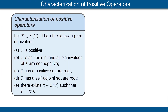Now we come to a nice theorem that gives several equivalent conditions for an operator to be positive. The theorem states that if T is an operator on V, then the following are equivalent: (A) T is a positive operator; (B) T is self-adjoint and all eigenvalues of T are non-negative; (C) T has a positive square root; (D) T has a self-adjoint square root; and (E) there exists some operator R on V such that T = R*R.